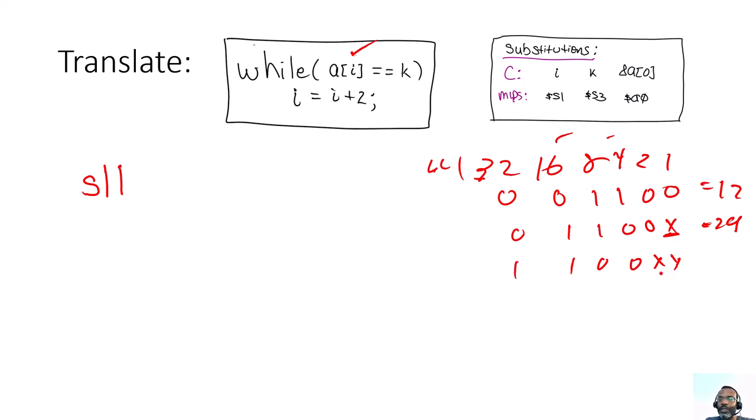So when we take a 12 and shift it left twice, 12 shifted left twice is the same thing as 12 times 2 squared. So every time we shift left, like if it had been 12 shifted left 3 times, it's the same thing as 12 times 2 cubed. If it had been 12 shifted left 4 times, it would have been 12 times 2 to the 4th.